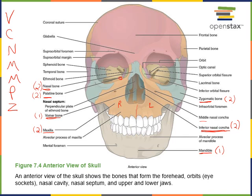L stands for lacrimal. There are two lacrimal bones, found in the medial orbit.